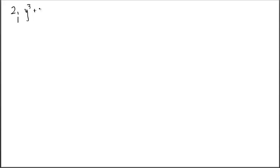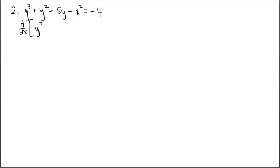Example 2 goes right underneath example 1. In this implicitly defined equation, you may notice there are three terms, all of which have a factor of y. When you differentiate with respect to x, because all three terms have a y factor, you're going to get three terms that have dy/dx in them.